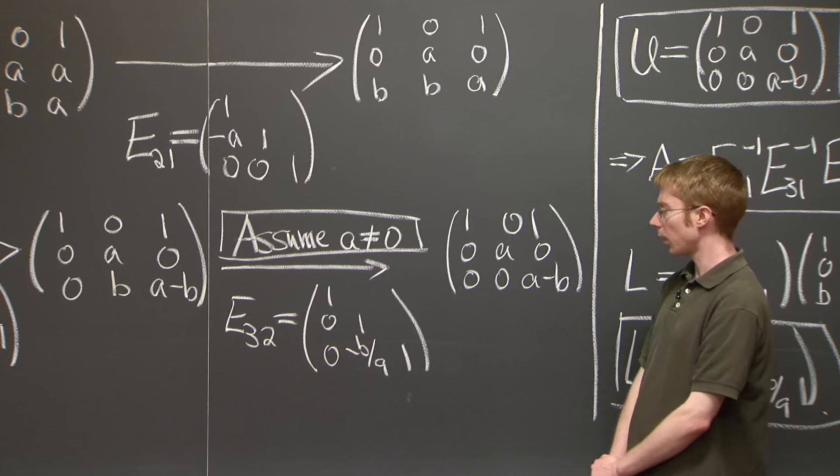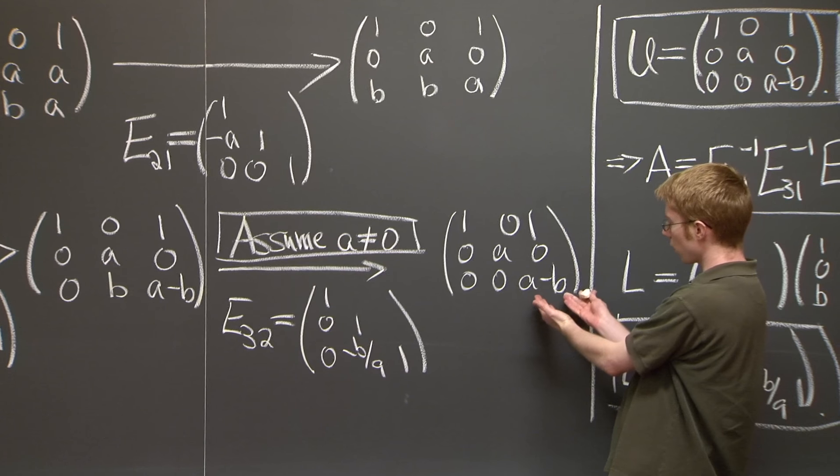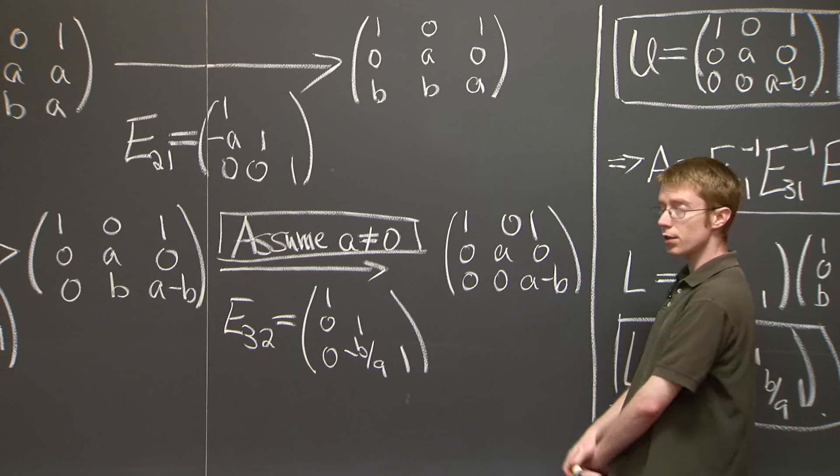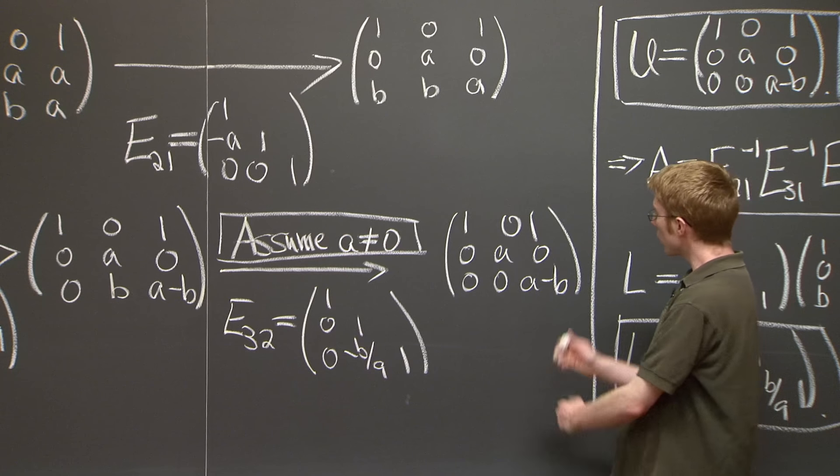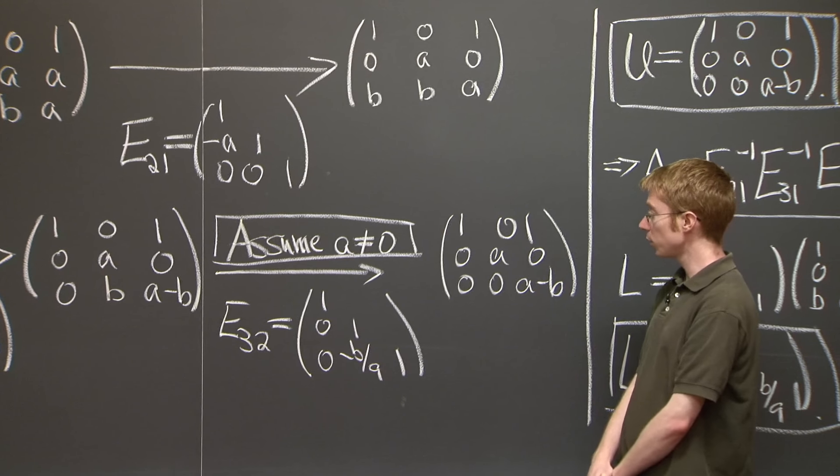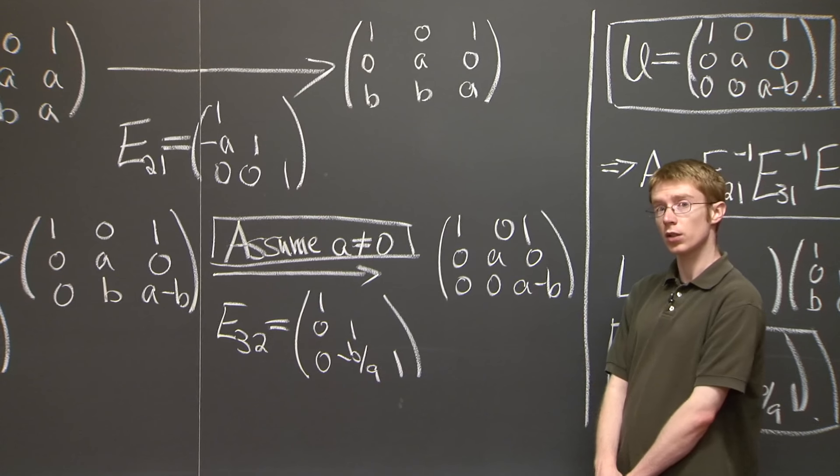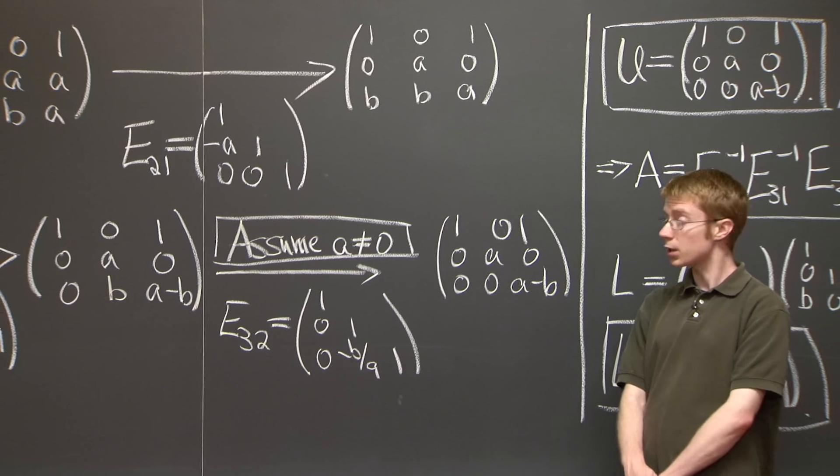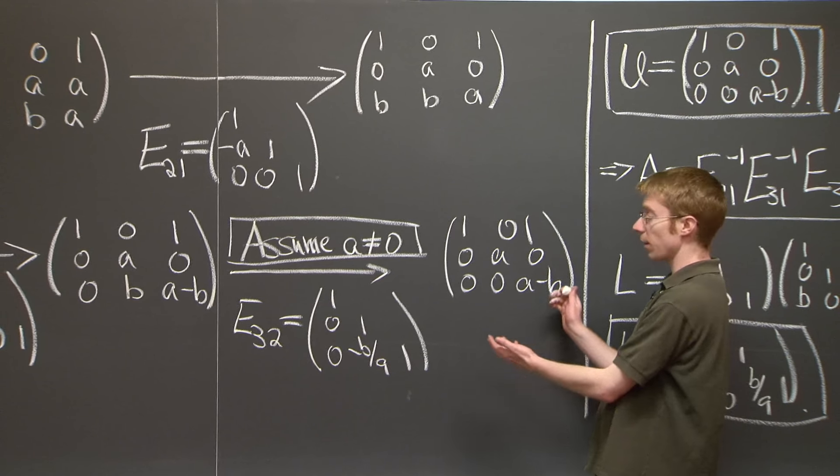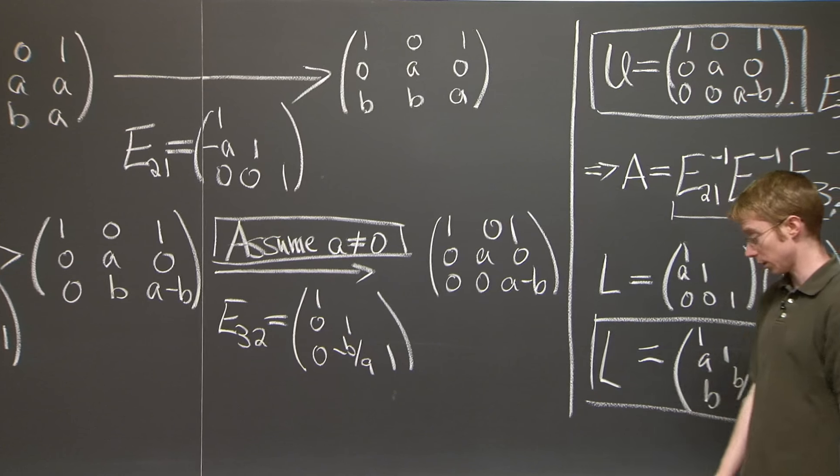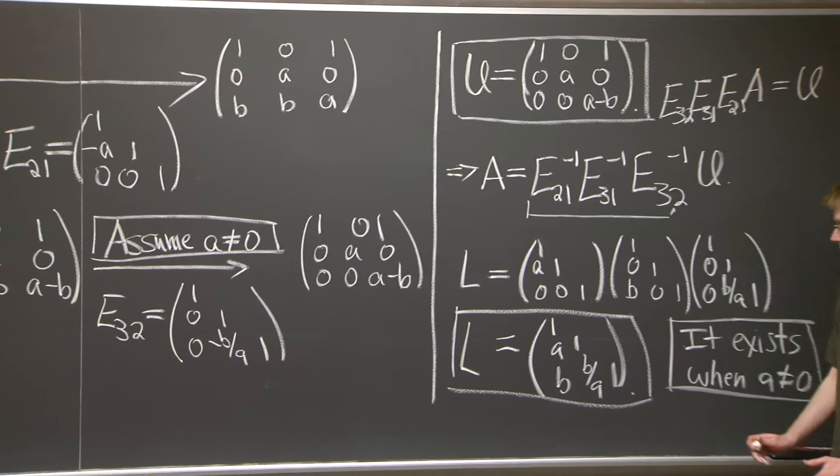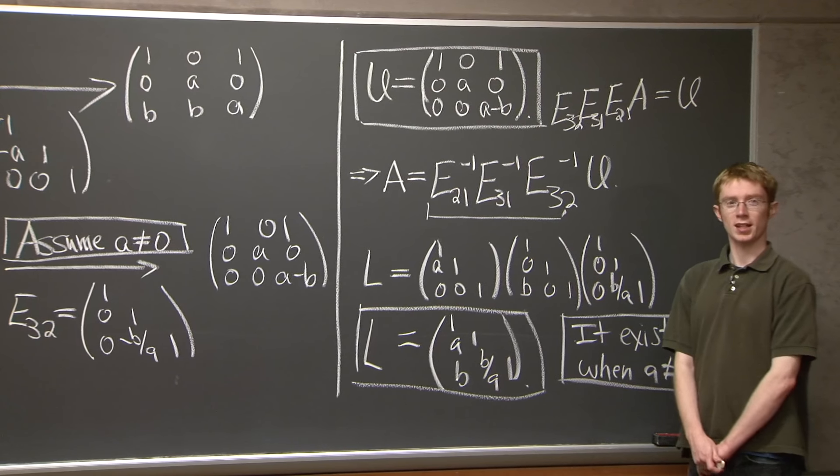It's not a problem for this entry to be zero, because we don't have to do a row exchange to get U. That's the only time when we can't do the LU decomposition. In particular, singular matrices can have LU decompositions. Good. OK. Thanks.